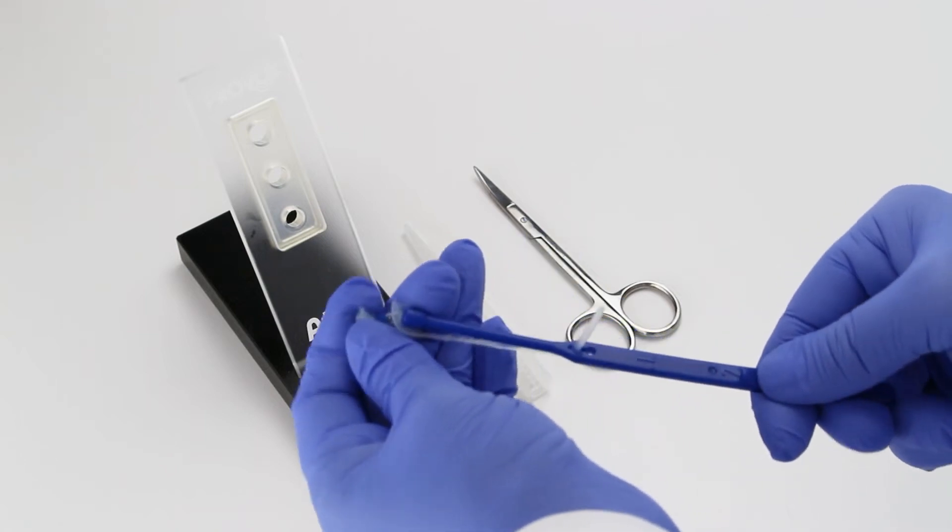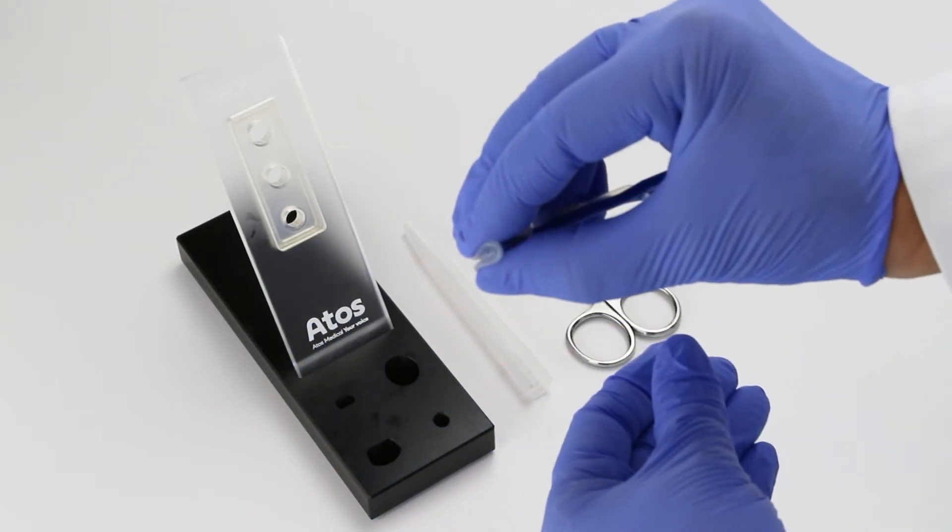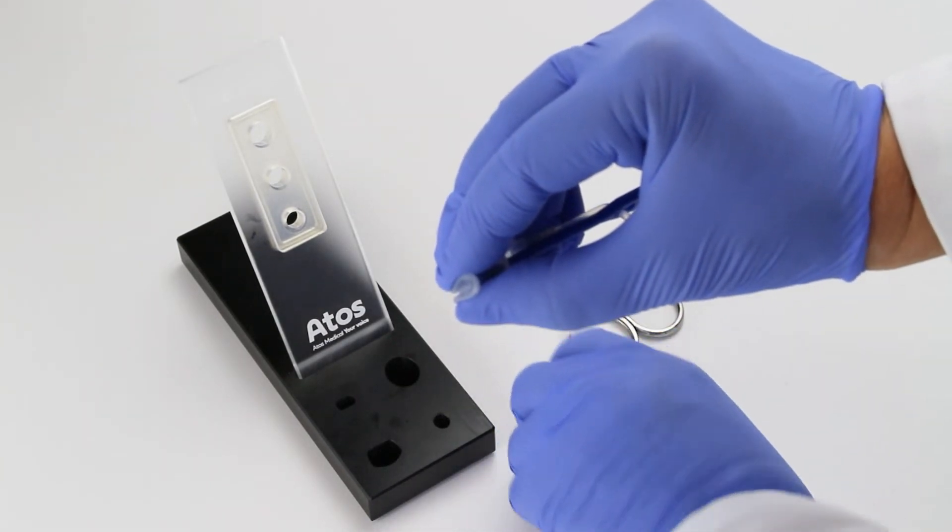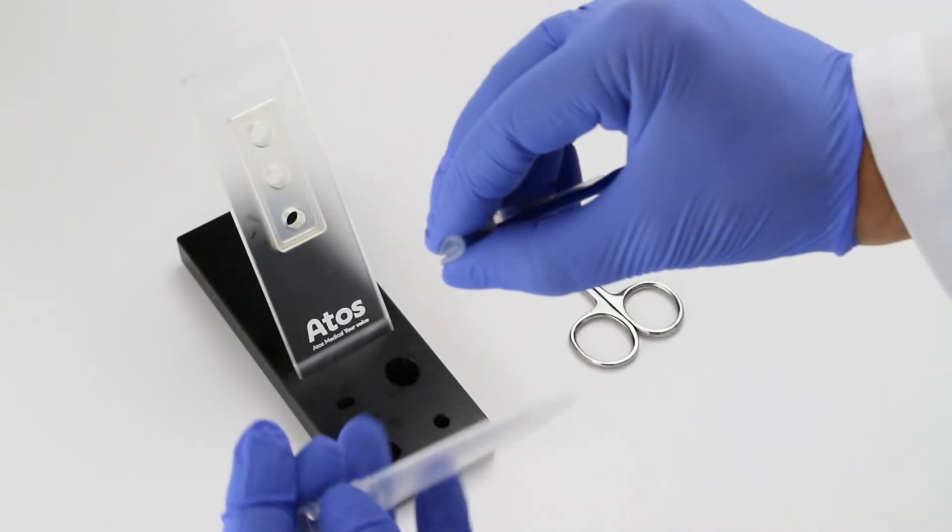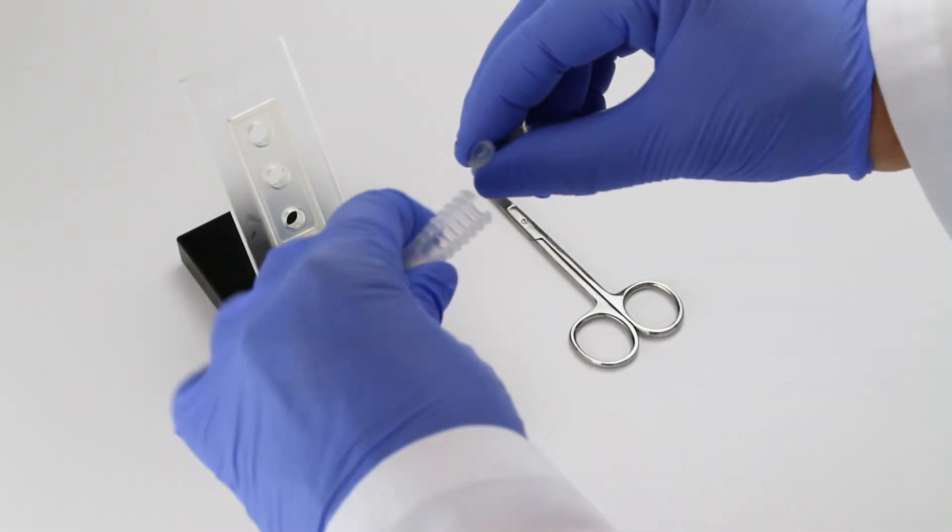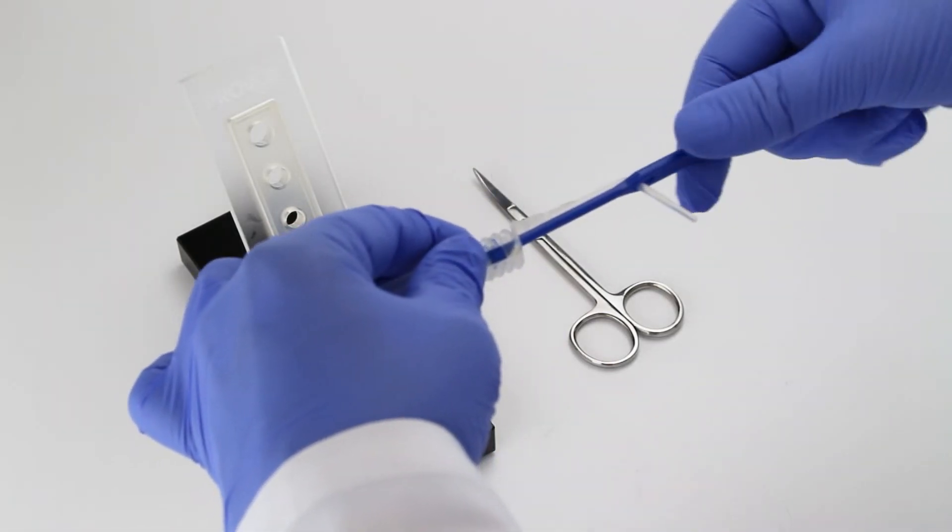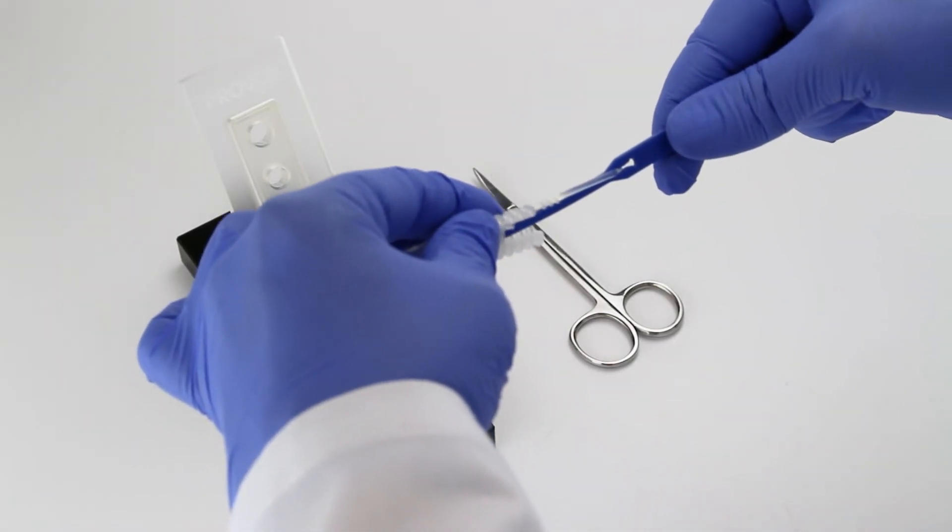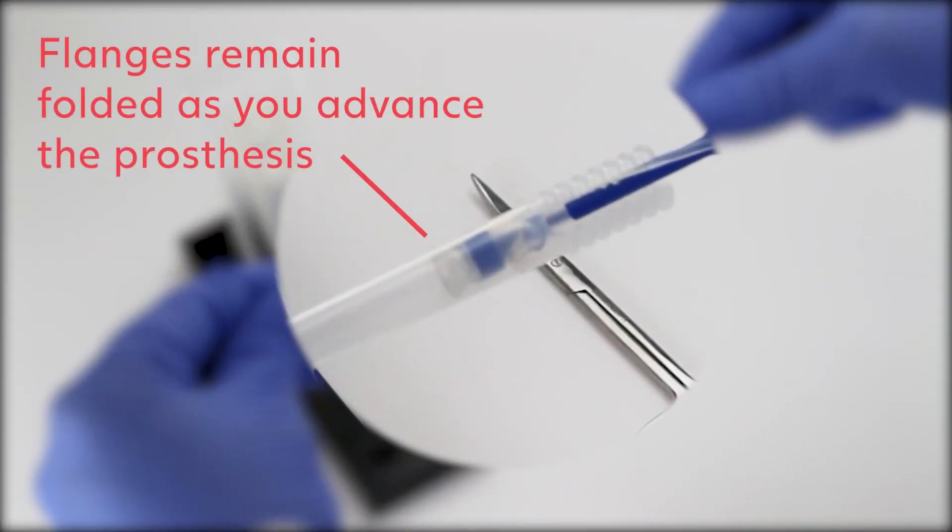Place the Active Valve on top of the inserter pin. Fold the esophageal flange forward by pinching it together like a taco. Hold the loading tube with your other hand and insert the esophageal flange into the opening in the tube. It is important to keep flanges folded forward as you advance the prosthesis in the clear loading tube.